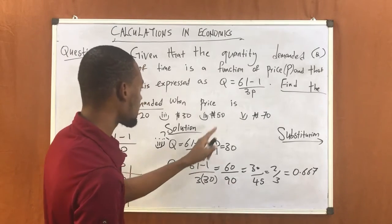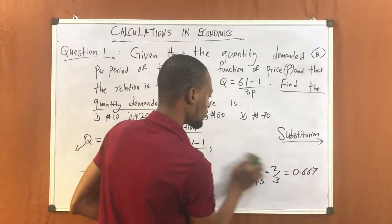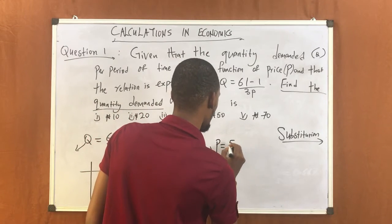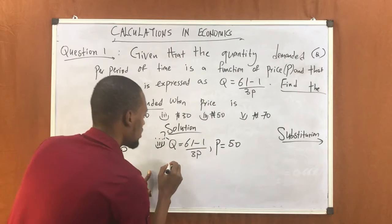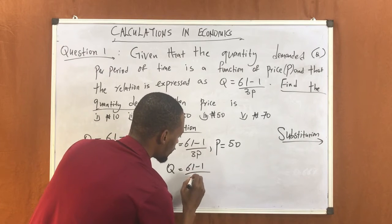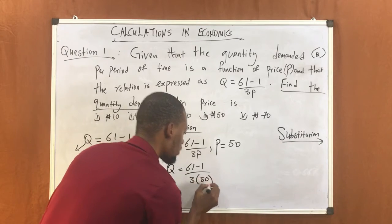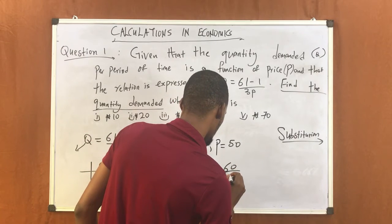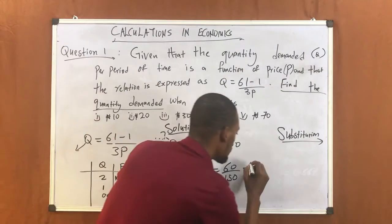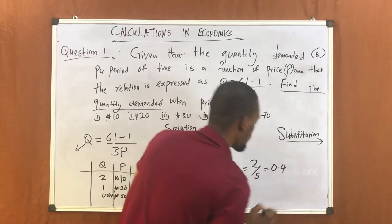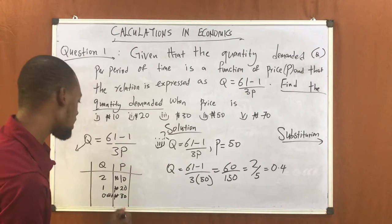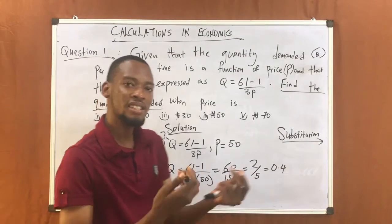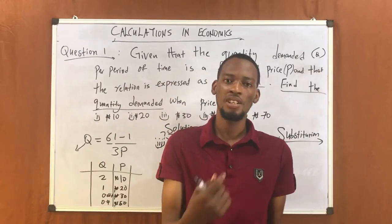Now let's solve for when P equals 50. At price equals 50, we are looking for Q. Q equals 61 minus 1 over 3 times 50. This gives you 60 over 150, which simplifies to 2 over 5, which equals 0.4. So at P equals 50, quantity demanded is 0.4.